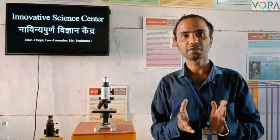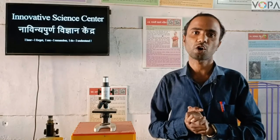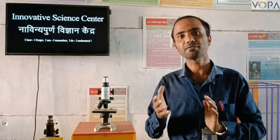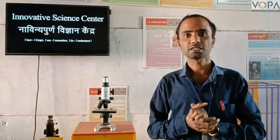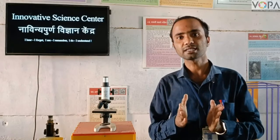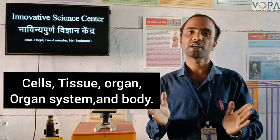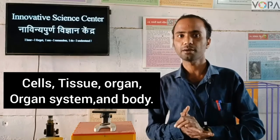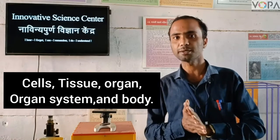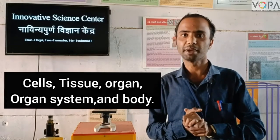In this way, in our body, there are also structural and functional organization of different cells. First, cells — different cells together form the tissues. Different types of tissues together form the organ. From the organ, organ system, and different types of organ systems, our body is made.